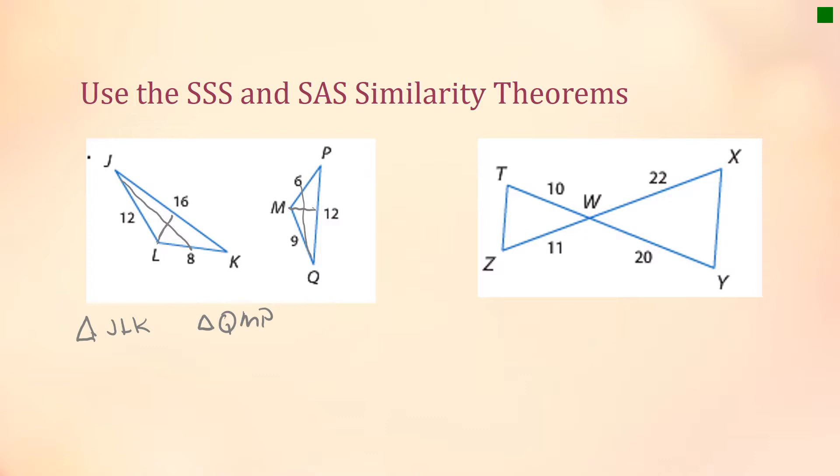Let's see. If we look at side JL and check the proportion of that to QM, JL is 12 and QM is 9. Both of those are divisible by 3, so that's 4 over 3.